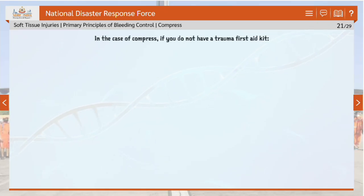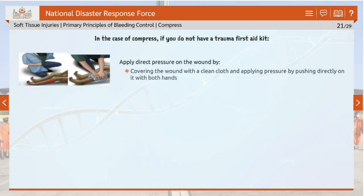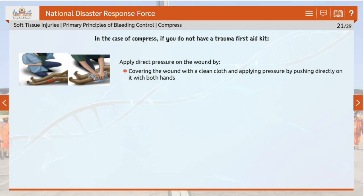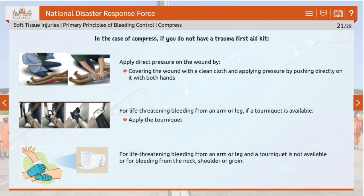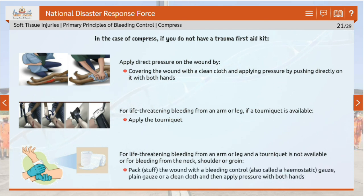In the compress step, if you do not have a trauma first aid kit, apply direct pressure on the wound by covering it with a clean cloth and pushing directly with both hands. For life-threatening bleeding from an arm or leg, apply a tourniquet if available. If a tourniquet is not available, or for bleeding from the neck, shoulder, groin or back, stuff the wound with a bleeding-control or hemostatic gauze, plain gauze or a clean cloth, and then apply pressure with both hands.